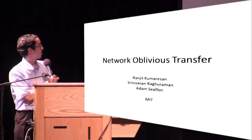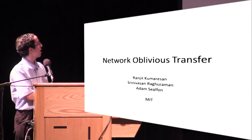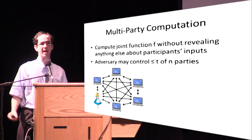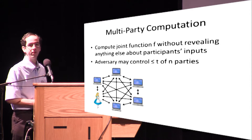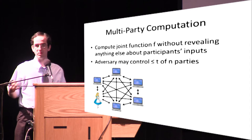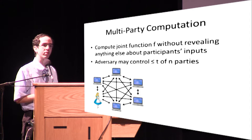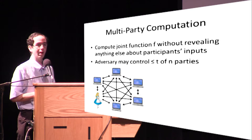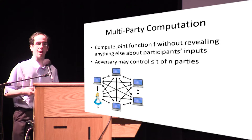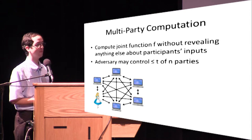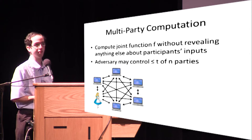This is joint work with Ranjit Kumarasan and Srinivasan Raghuramon. The task we're interested in here is secure multi-party computation, where n parties want to together compute a joint function of their inputs without revealing anything except the output value. The protocol should be secure in the face of an adversary who controls at most t of the n parties.